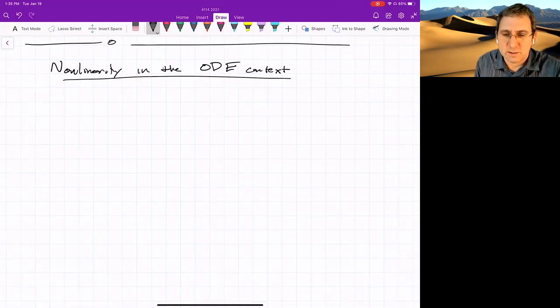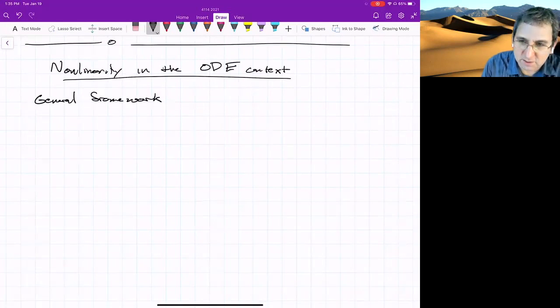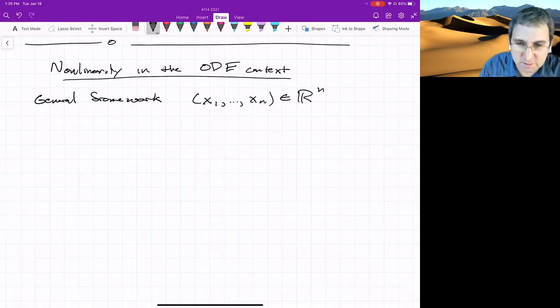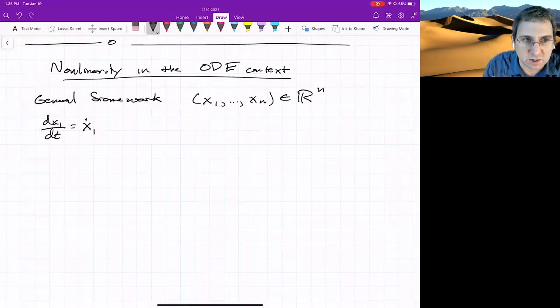We'll be considering a general framework for ordinary differential equations, which is that you've got n states, I'll call them x1 through xn, and let's just think of this as a point in Rn. We will write x1 dot, so x1 dot means dx1 dt. I'm going to use the over dot notation. So this means how does x change with time?